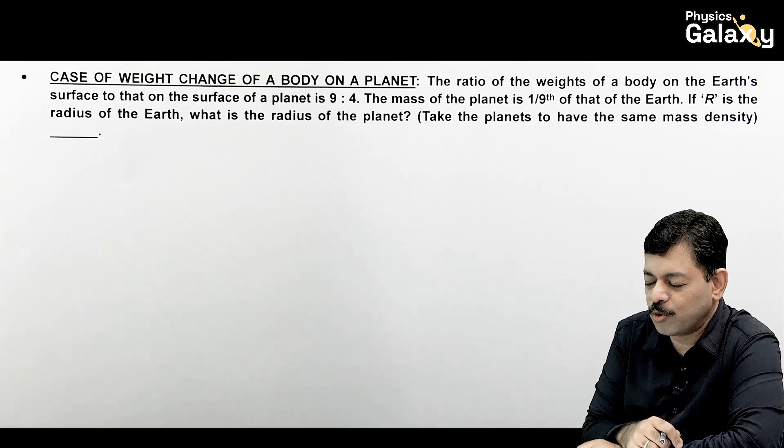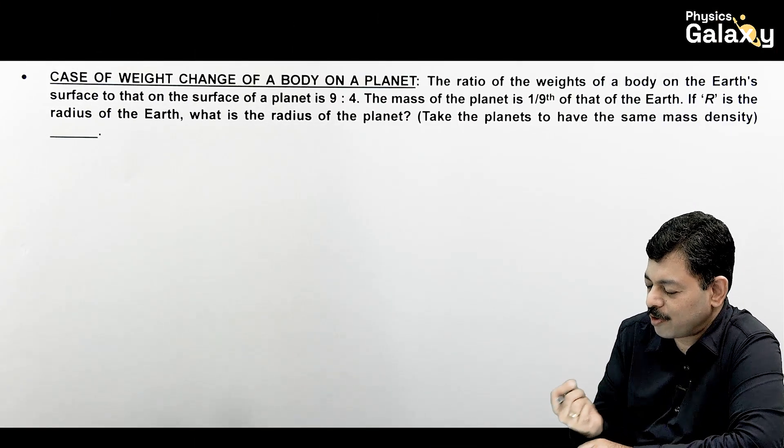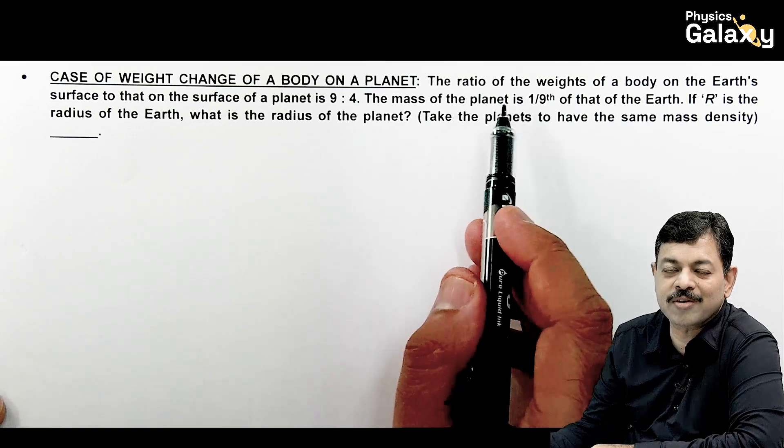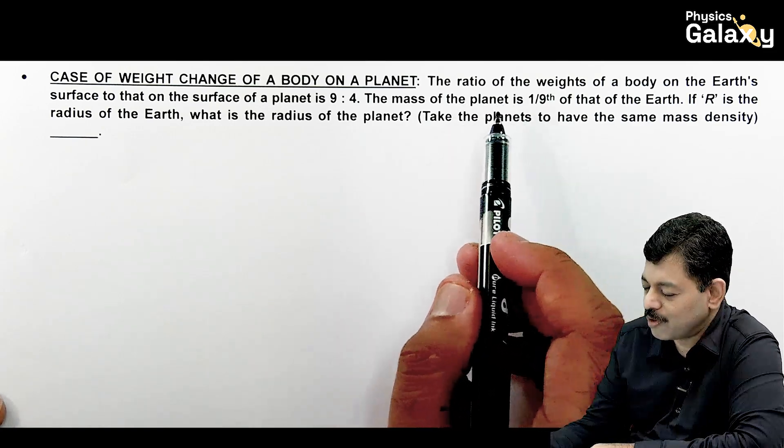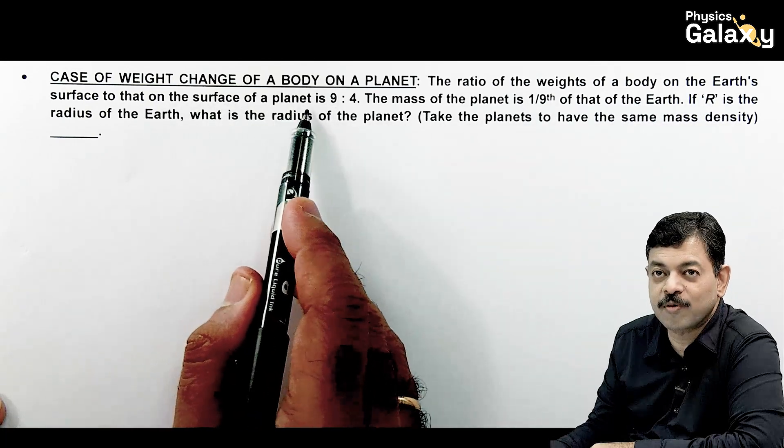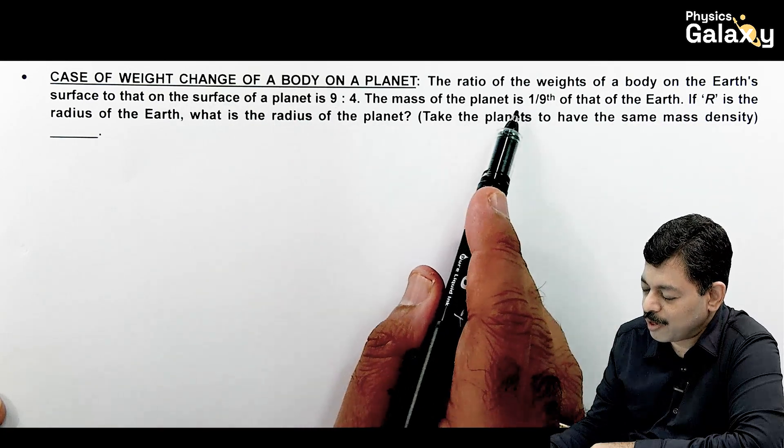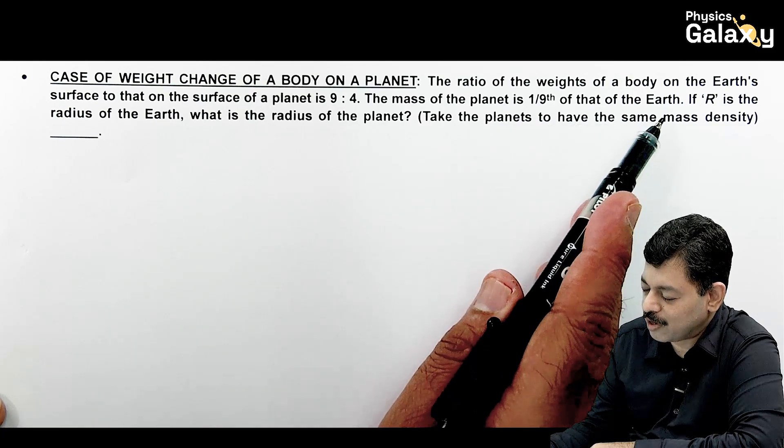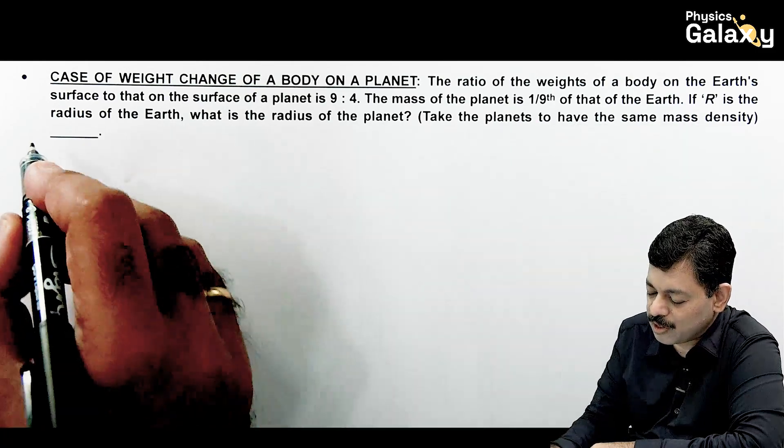Here we'll talk about the weight change of a body on a planet, a fundamental question based on gravitational acceleration. The ratio of the weights of a body on Earth's surface to that on the surface of a planet is 9:4. The mass of the planet is 1/9th that of Earth, and if R is the radius of Earth, we need to find the radius of the planet.